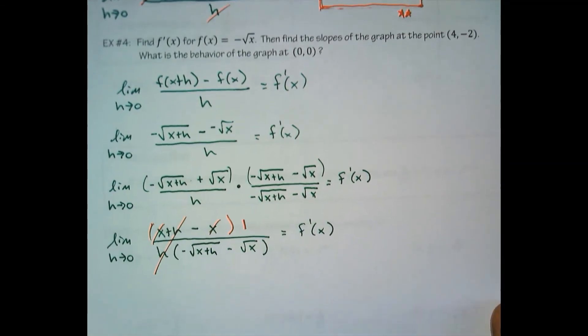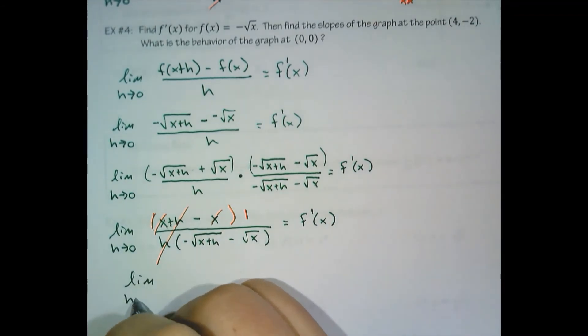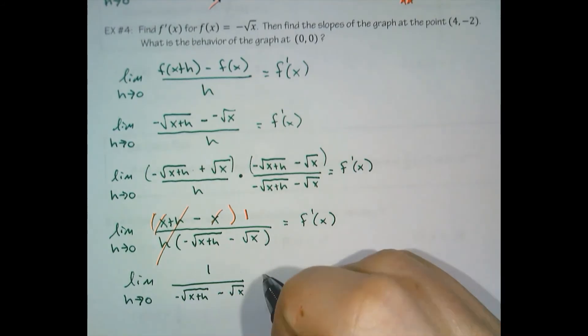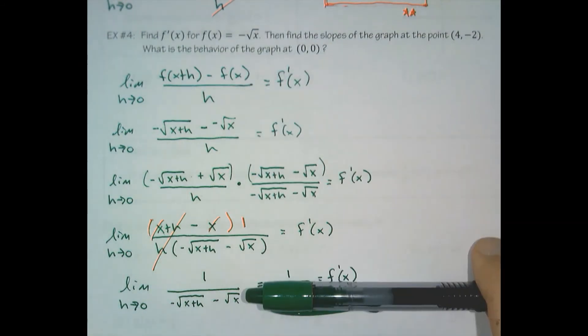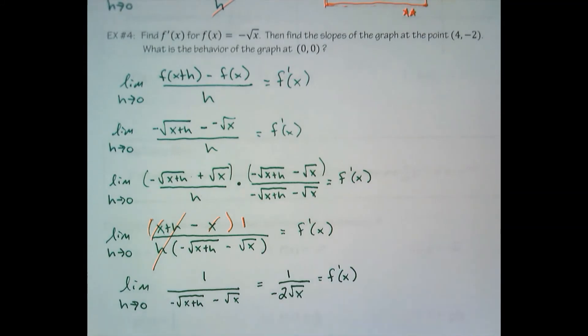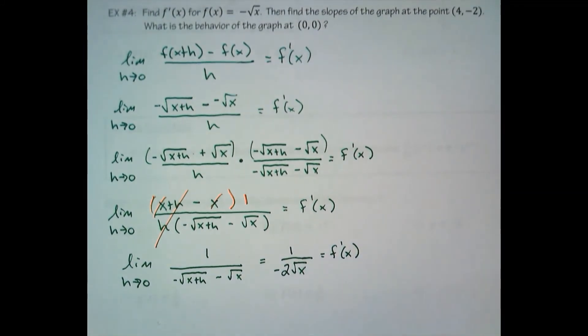And now, if I do the limit or find the limit of this fraction, I can now plug 0 in for h. And that would give me 1 over negative 2 root x. This is the formal process by finding the derivative. Thankfully, there will be a better way in the future. We're only a couple days away from that. So we have our derivative.